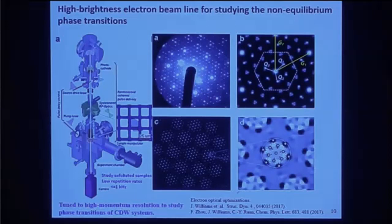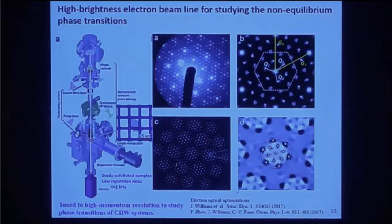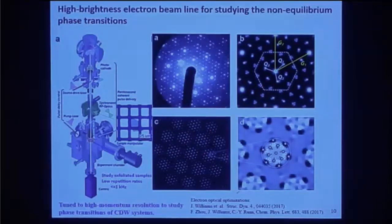In answer to the question about how momentum space is measured: this is diffraction. An electron wave comes in as a coherent wave and creates an interference pattern — a diffraction pattern from the atomic grating, which is encoded with the density wave modulation on the atomic grating. It's analogous to a diffraction grating.